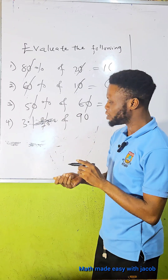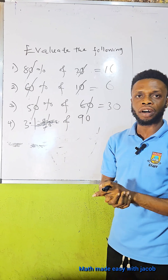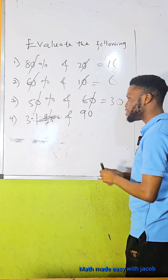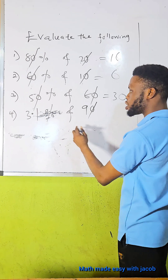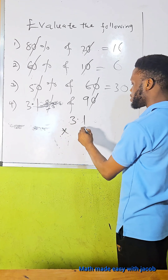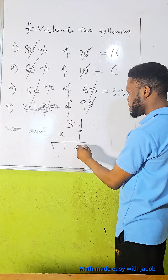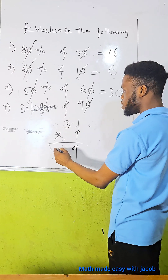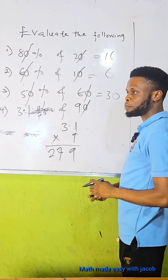Now let's look at the more complex ones. We have 3.1% of 90. Here, zero will be canceled out. You multiply 3.1 times nine. Nine times one is nine. Nine times three is twenty-seven. And you put the decimal point.